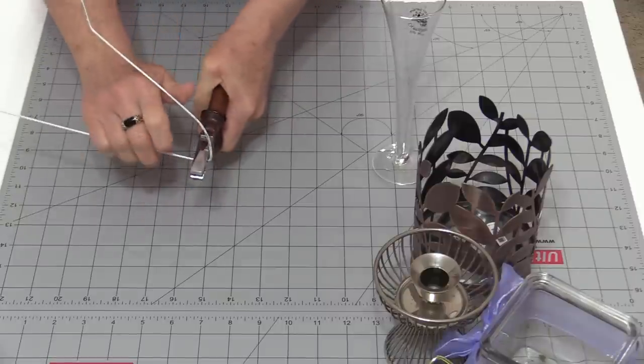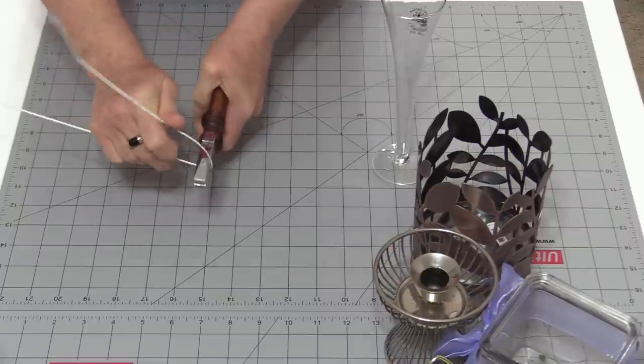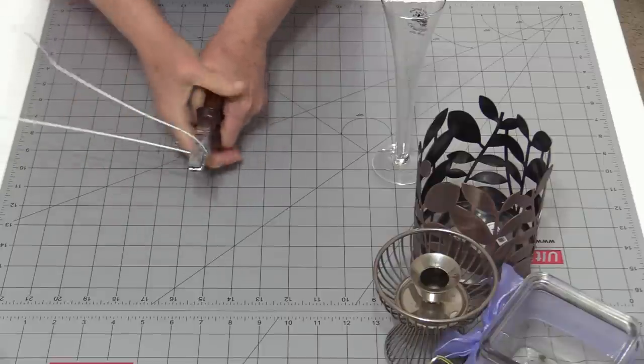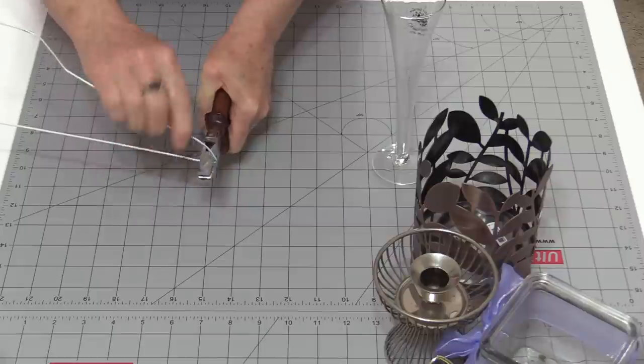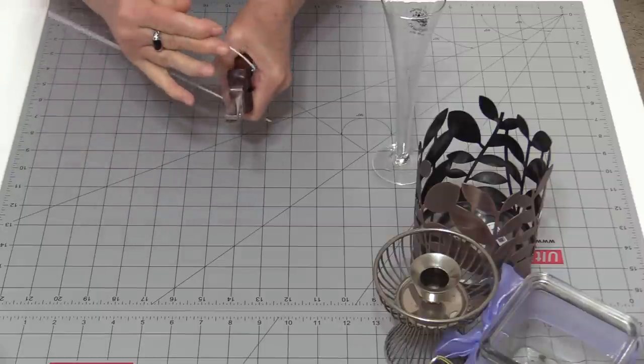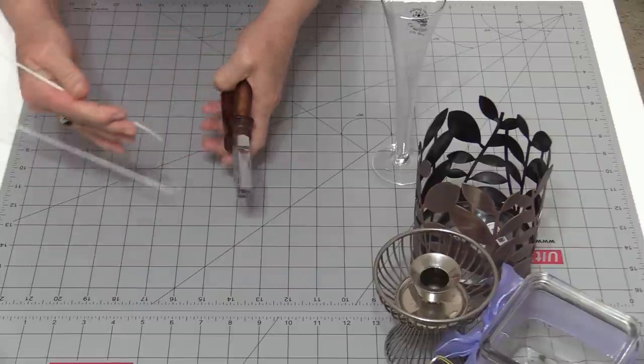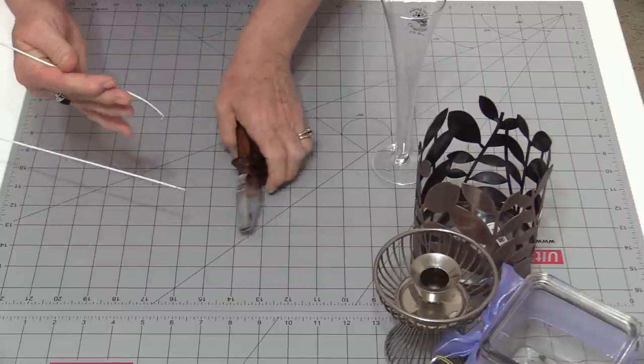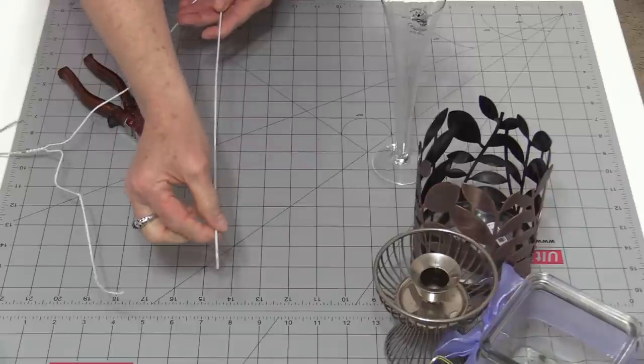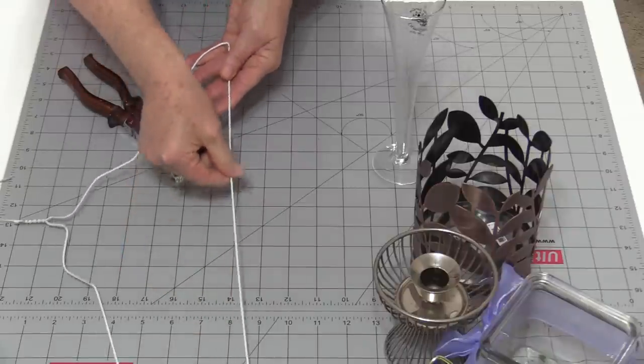So you're going to put a little bit of a groove in that wire and just continue squeezing and then move it back and forth a little bit. And just by moving that back and forth and squeezing at the same time, you're going to be able to cut that wire. So I've cut the one end because I want this long straight piece.